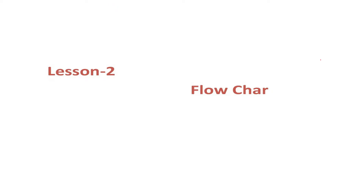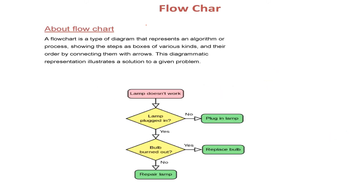This is lesson number 2: flowchart. What is a flowchart? The name suggests showing the flow or depicting the flow with the help of a chart. A flowchart is a diagrammatic representation of the steps and the control movement or flow of control. It is a type of diagram that may represent steps to solve certain tasks, or it can also be a precursor to an algorithm, a code, or a program.